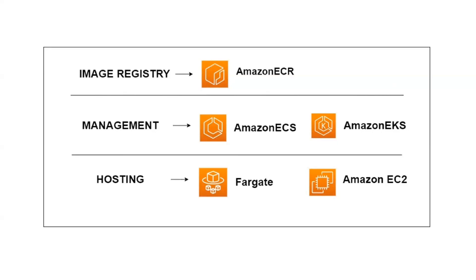Now let's understand this in the context of AWS. An image is a lightweight, standalone executable package of software that includes everything needed to run an application. When we execute this image, a container gets created. For storing these images we have Amazon ECR in the context of AWS.